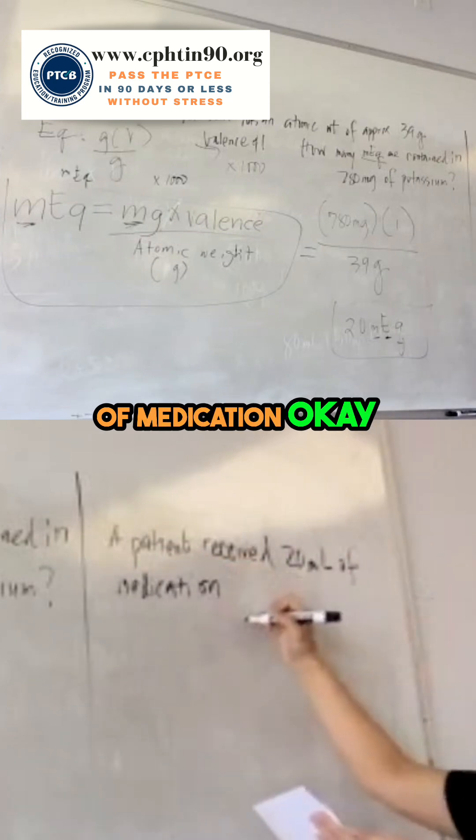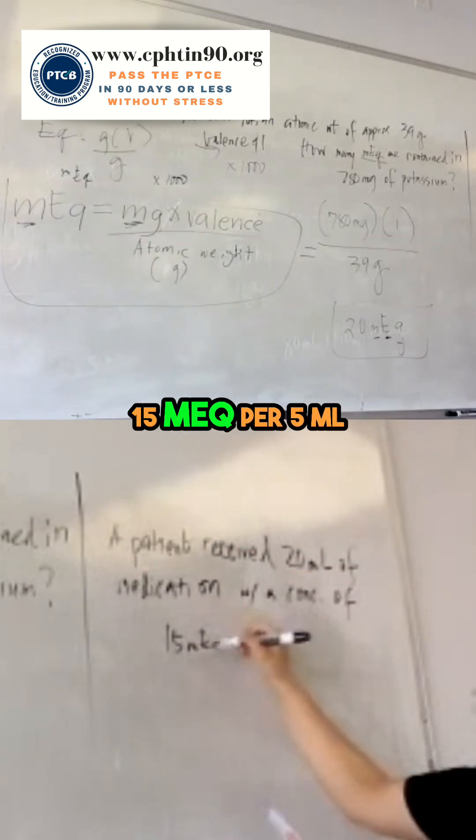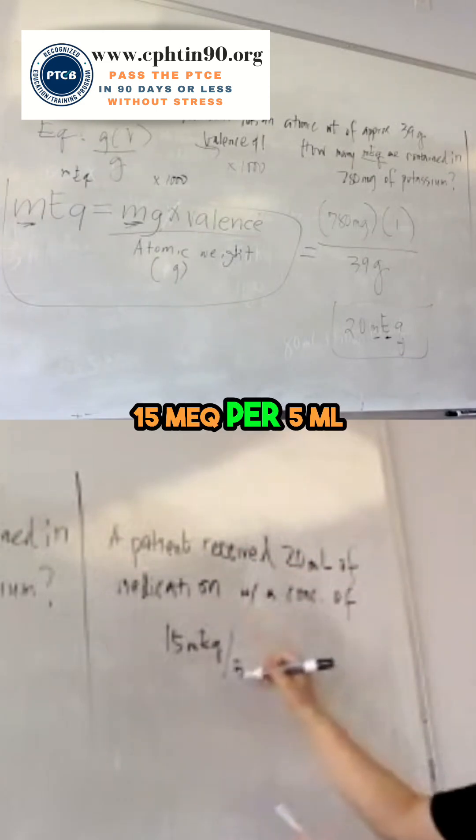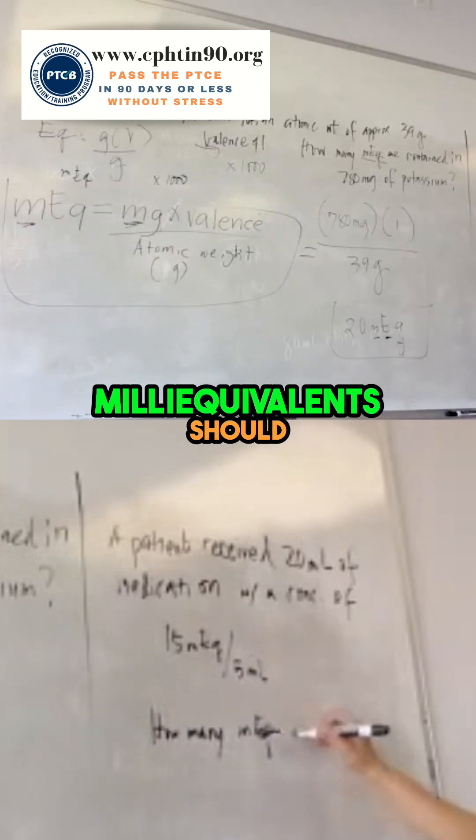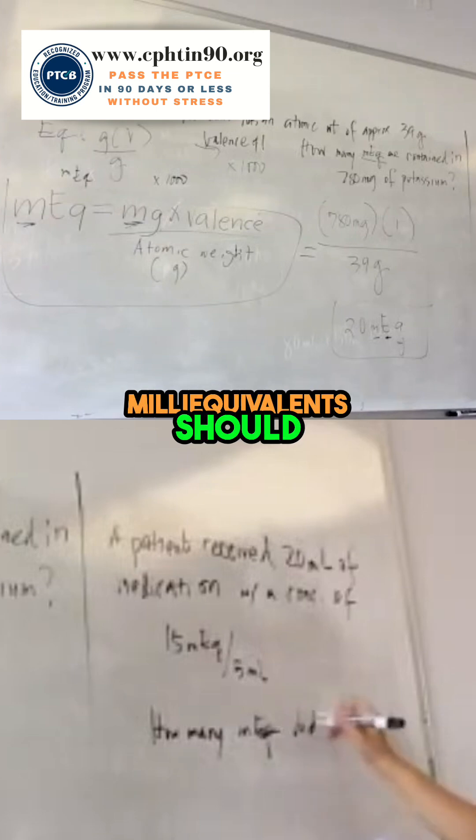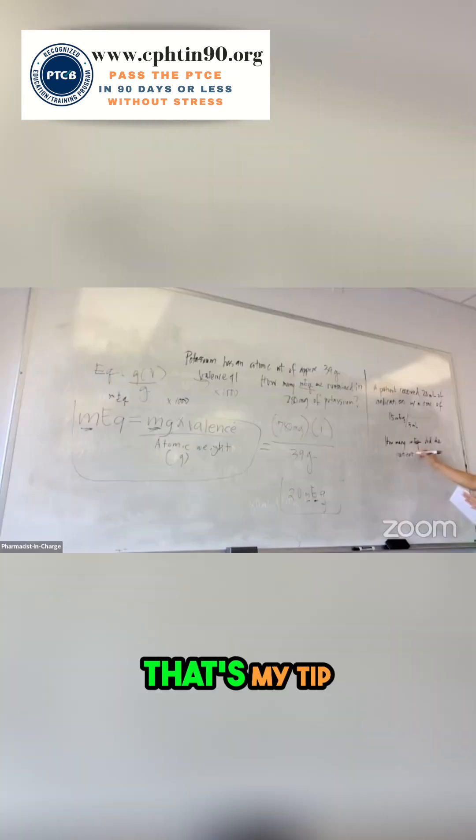A patient received 20 ml of medication with a concentration of 15 mEq per 5 ml. How many milliequivalents did the patient receive? Do not overthink. That's my hint.